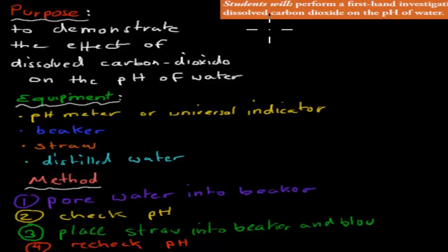So the purpose was to demonstrate the effect of dissolved carbon dioxide on the pH of water. So what does carbon dioxide, which is in our blood, do to the pH of water? And that's important because we produce carbon dioxide as a byproduct of cellular respiration, and what does that do to our pH of our plasma?